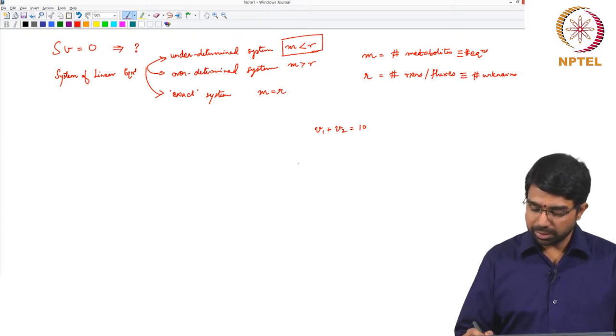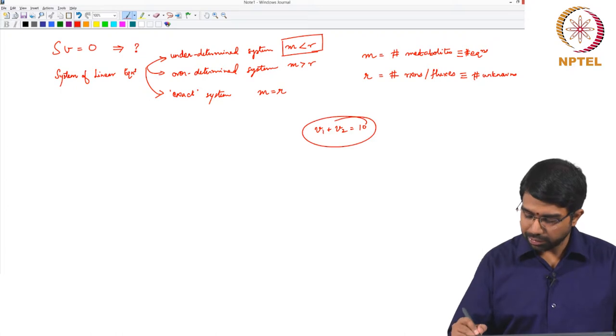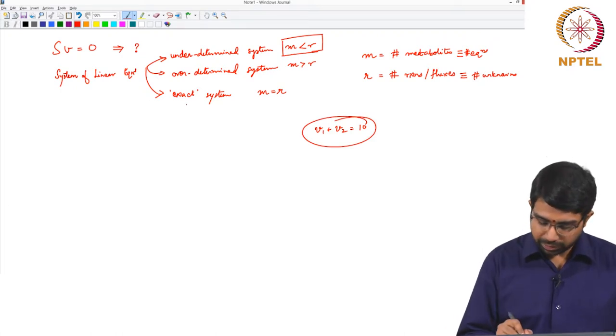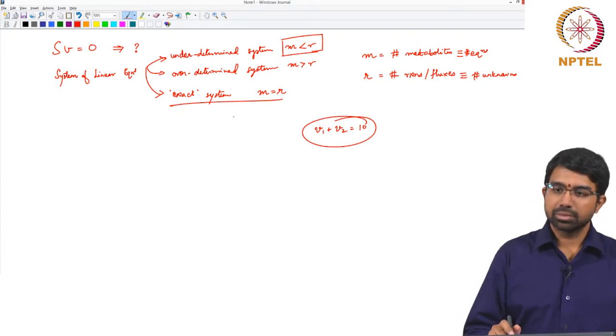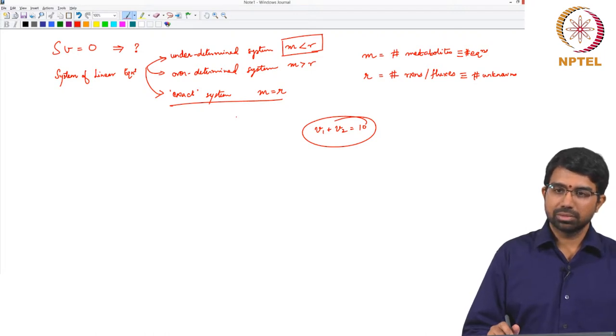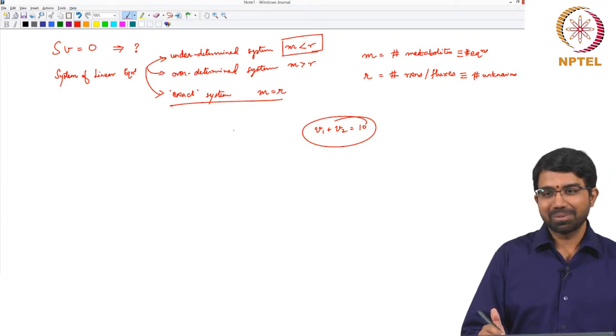When you have an underdetermined system, you now need some other ways of solving it. What happens if you have an exact system? What is the solution? All 0s.